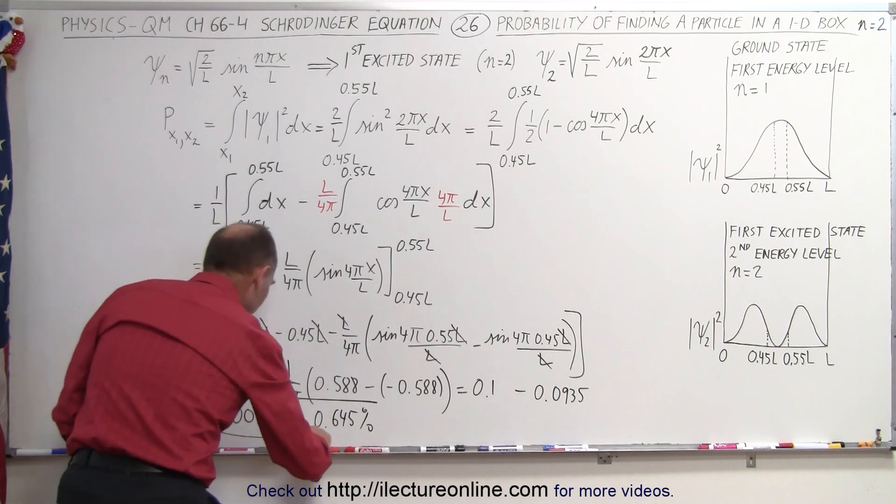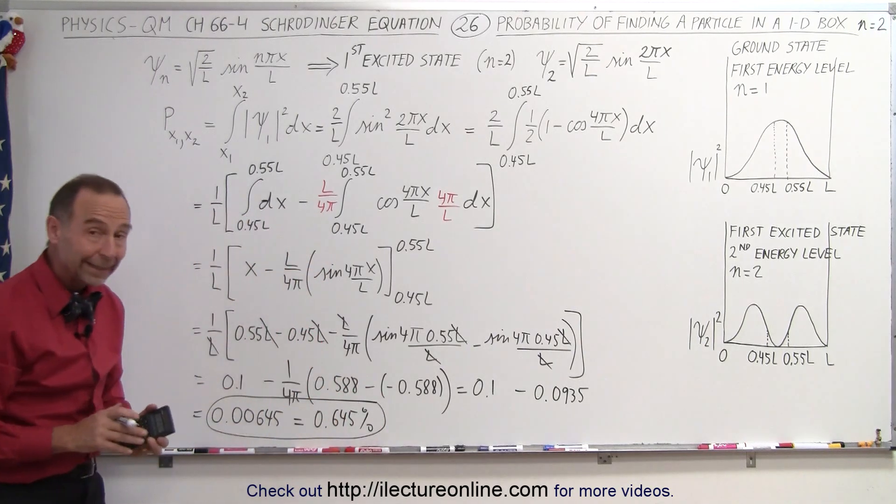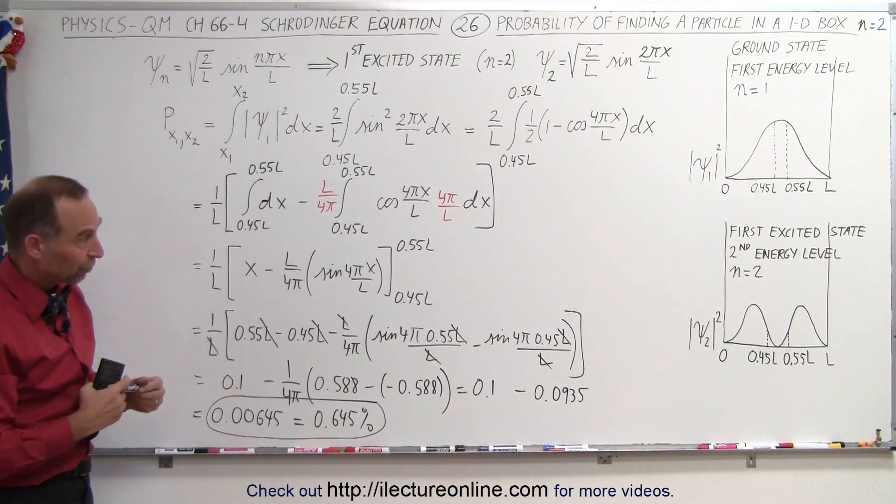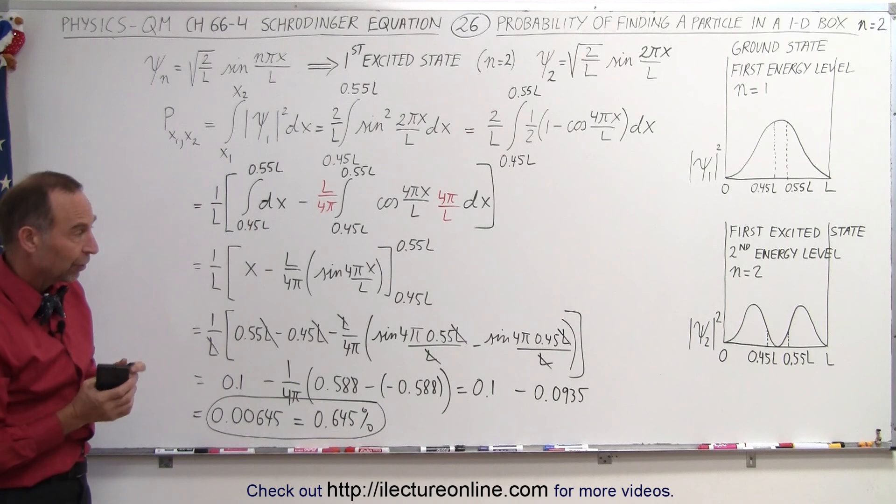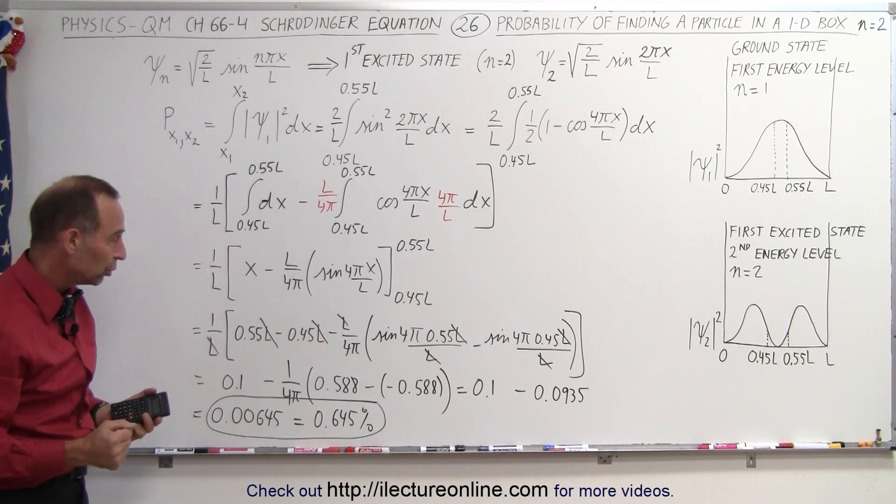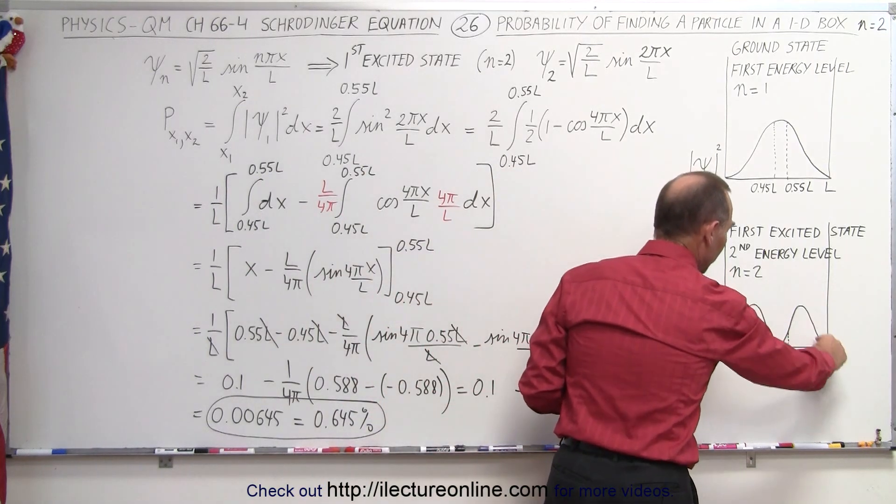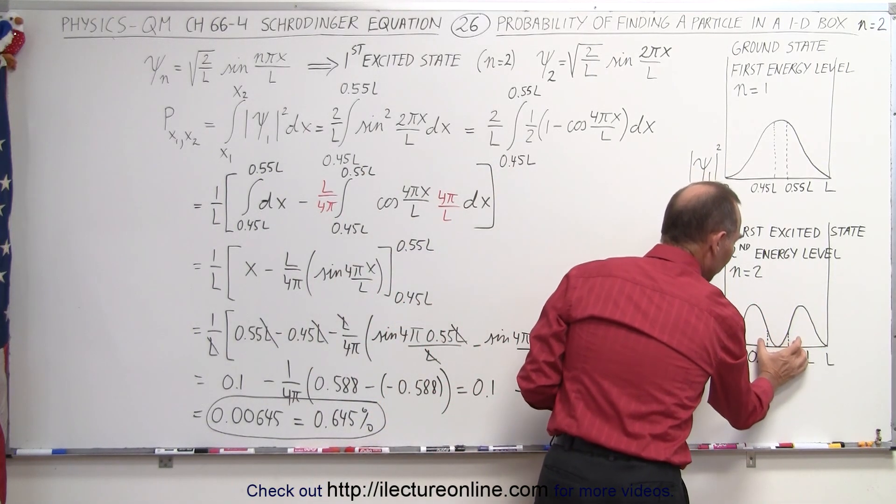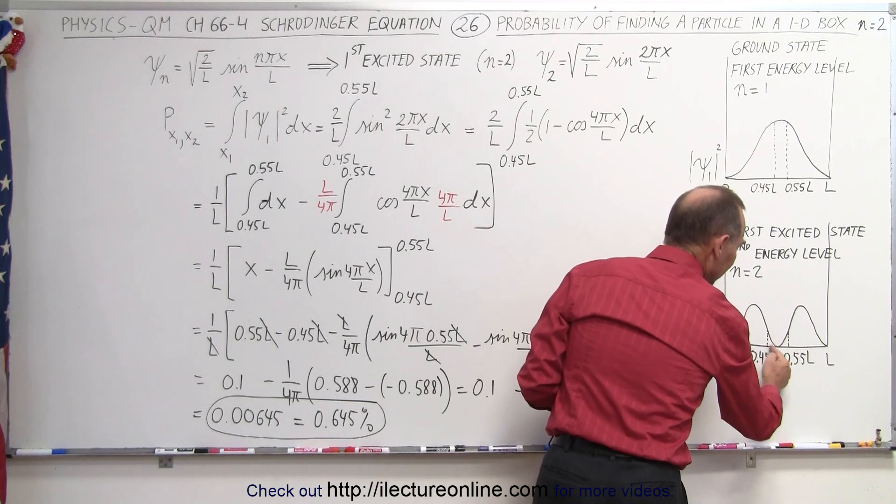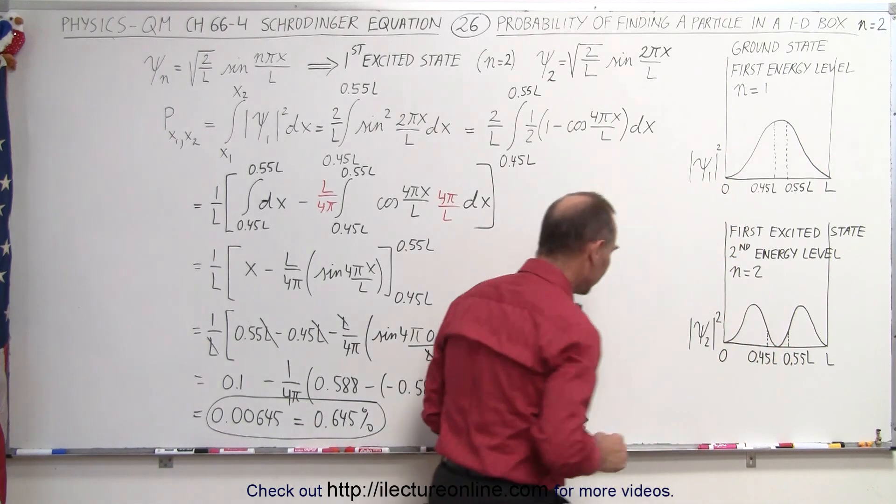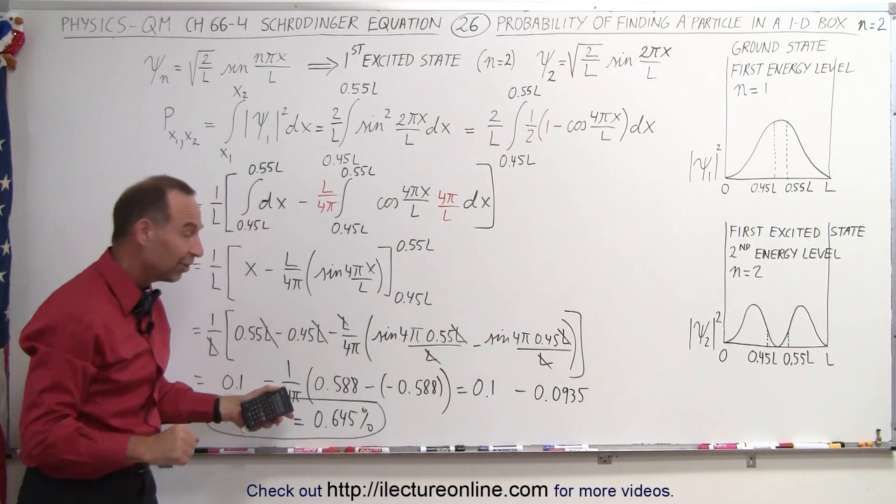Notice that is a much smaller quantity than what we had before and of course it makes sense when we look at the graph. So in the first excited state, n equals 2, you can see then because the way the probability density function looks there's not a lot of probability that will find the particle right in that region right there and you can clearly see that it's actually less than 1% probability to find it there and much greater probability to find it elsewhere.